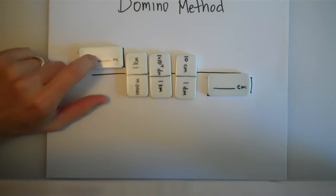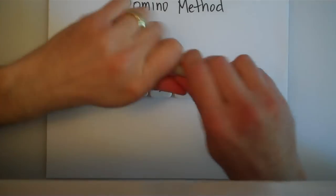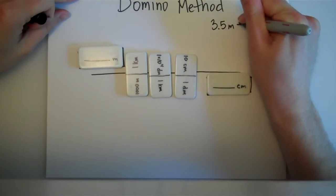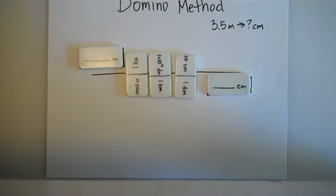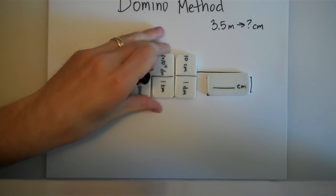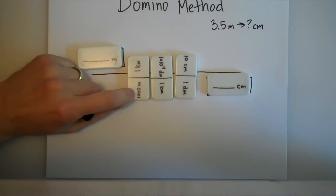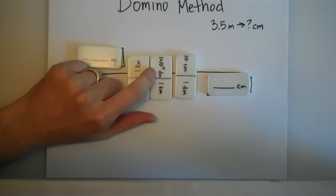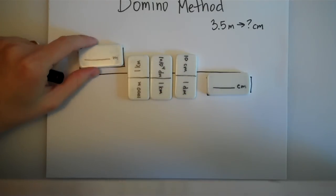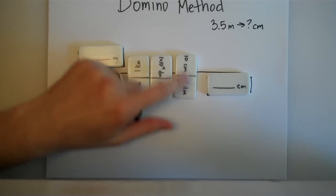In this case we would put our number up here. A typical problem would say something like this: 3.5 meters is equivalent to how many centimeters? I have a couple of ways of doing this problem. I could keep these set up the way they are, and I would know that 1,000 meters is a kilometer, 1 kilometer is 1 times 10 to the 4th decimeters, and 1 decimeter is 10 centimeters. That would give me centimeters down here.